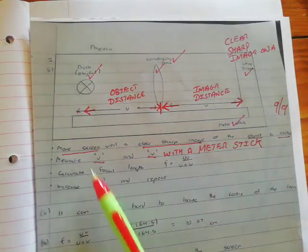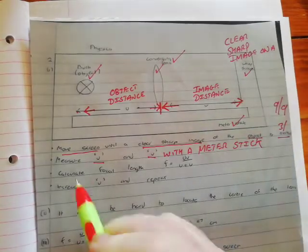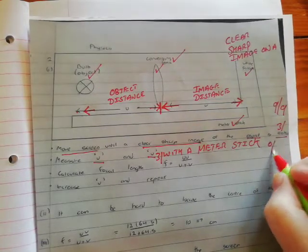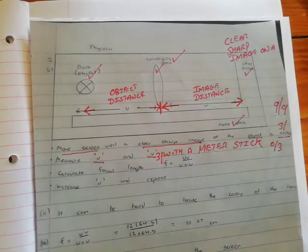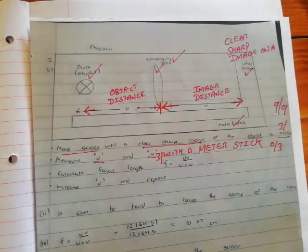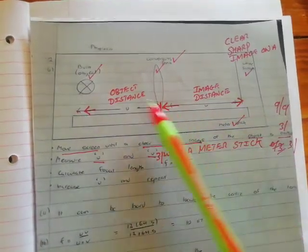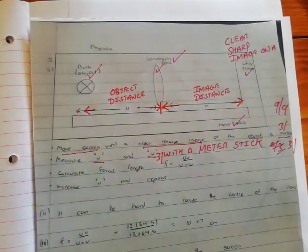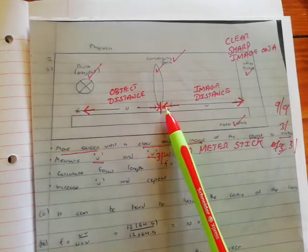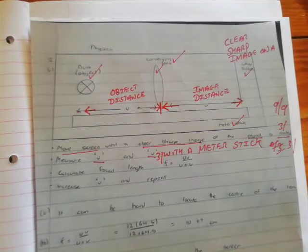Okay, so move the screen. Clear, sharp image. Three marks. Measure U and V. Another three marks. Mention the meter stick. Zero to three marks. But hold it! They're not that bad in Leaving Cert marking. They will look up there and say, yeah, the student has a meter stick. So we will give him the three marks. That's why it's so important to have a perfectly well-labeled diagram with as much information as possible in it. What have you learned from this? No hanging arrows. The labels must go right to the center of the converging lens.